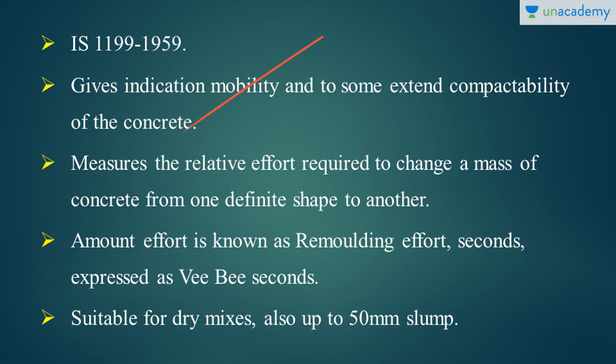Mobility means the easiness to change from one position to another, and compactability is the extent of compaction. What this test does is it measures the relative effort required to change the mass of concrete from one definite shape to another — that is, how easily or how difficult it is for a sample of concrete to change from one definite shape to another. This effort is known as the remoulding effort, and it is measured in seconds and expressed as VB seconds.